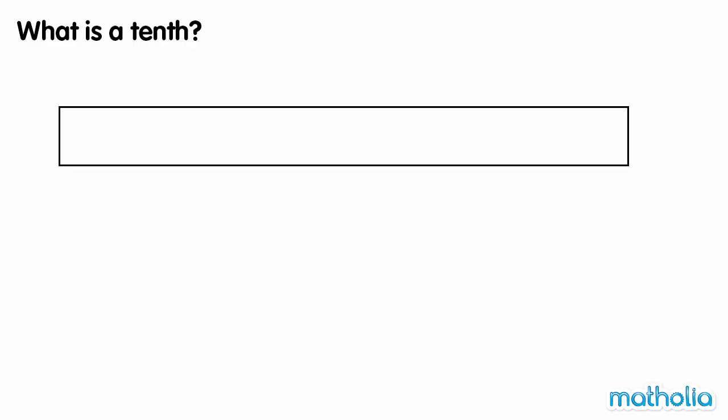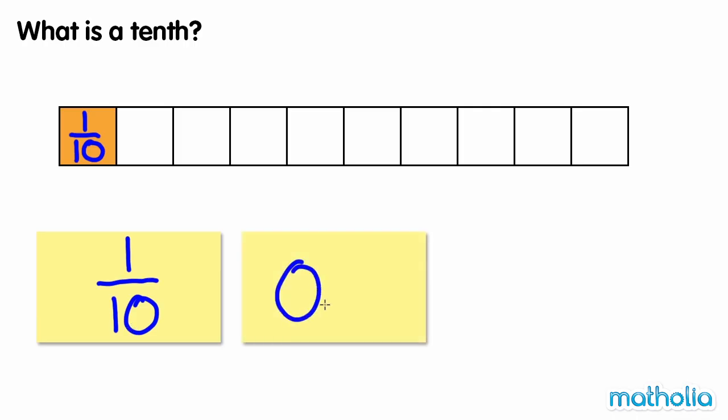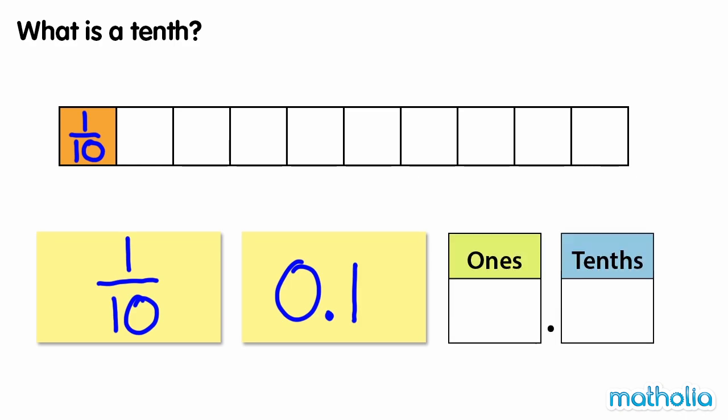What is a tenth? We can draw a rectangle to represent one whole. We can then divide the rectangle into ten equal parts. Colouring one of the ten parts gives us the fraction one-tenth. We can also write one-tenth as the decimal number 0.1. We can show one-tenth on a place value chart. There are zero ones and one-tenth.